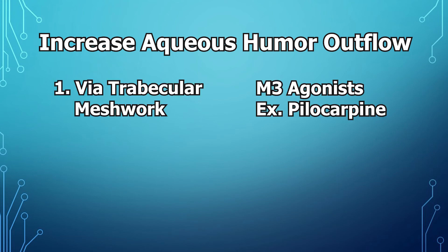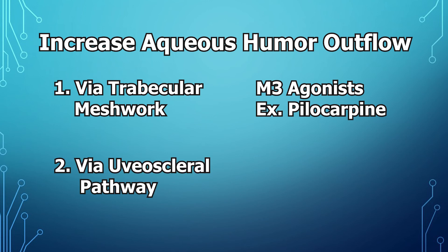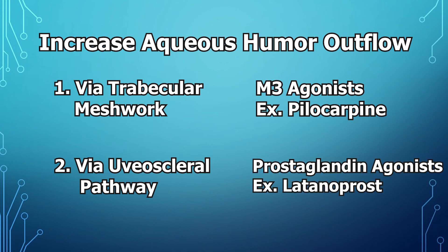Which are essentially anything that can agonize the M3 receptors. So like pilocarpine and carbachol. And two is anything that can increase uveoscleral outflow, which is generally going to be a prostaglandin agonist like latanoprost and bimatoprost.